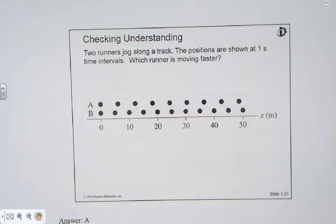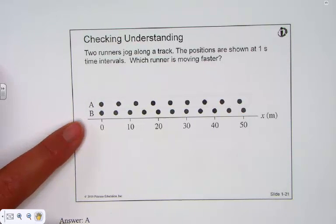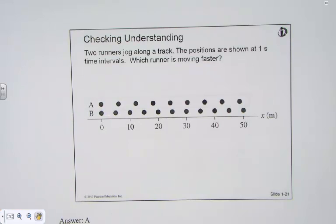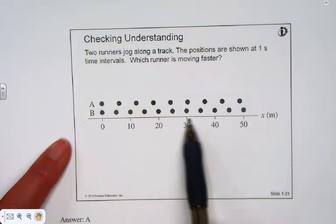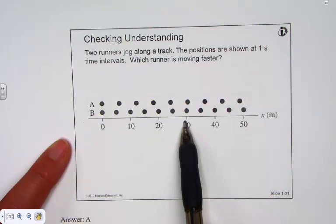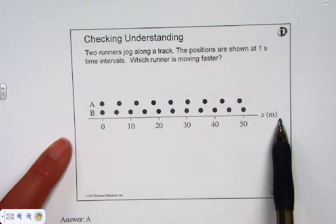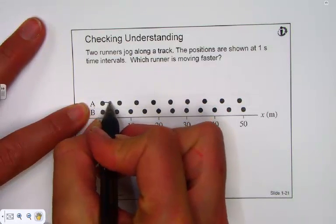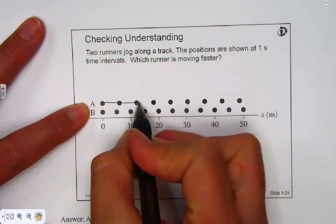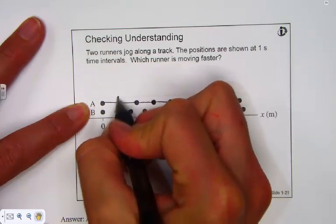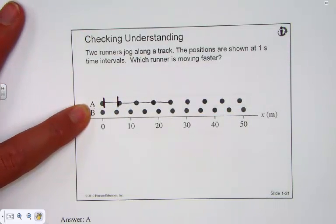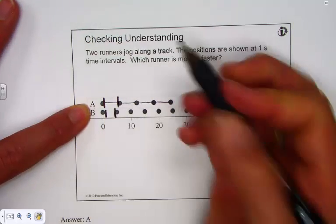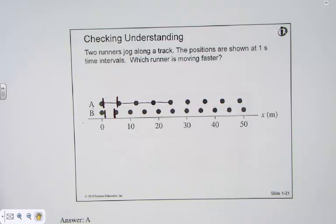Let's try another check for understanding. We have two runners jogging along the track, runner A and runner B. The positions are shown at one second time intervals. Which runner is moving faster? Let's get our bearings with what we're seeing. This is constant distance. Every 10 meters has been marked on our coordinate system. Meters has been labeled as the unit. Their learning speed in the second time. From point 1 to point 2, point 2 to point 3 and so forth. Take a look at the distance she traveled in one second. Compare that to the distance runner B traveled in one second. Who is running faster?